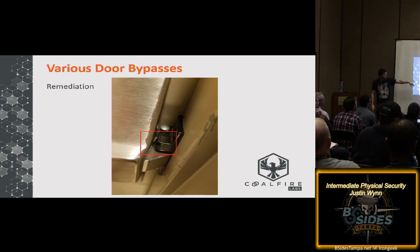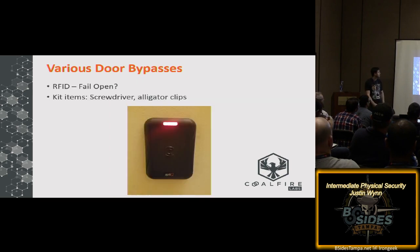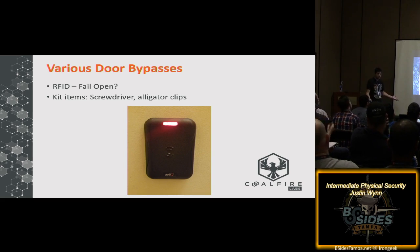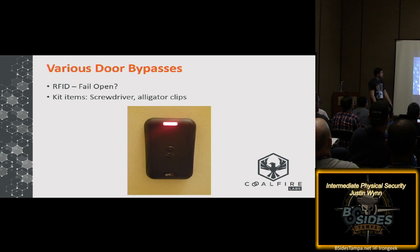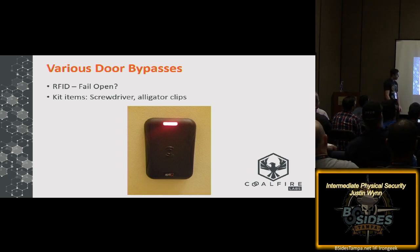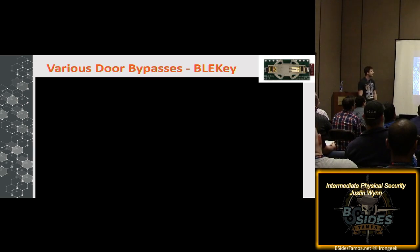Remediation: auxiliary deadlatch bolts are available for outswing doors as well — when depressed, the latch cannot be retracted without significant force. For RFID systems: check if they fail open. If power goes out, many doors unlock. You can simulate this by removing the cover and unplugging the wires. With alligator clips, you can do this at night, clip the circuit to keep it functioning, then come back during the day, pop it, remove the clip, open the door. The Wiegand protocol used by most RFID systems is also vulnerable to replay attacks.